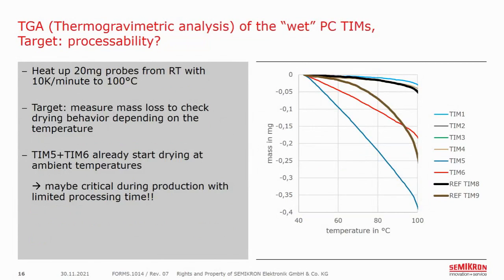In another test, we investigated the wet TIM materials in a thermogravimetric analysis, or TGA, to see if the solvent is already evaporating at lower temperatures or only later. A small probe is put under temperature and the mass loss is measured. Our REF TIM9 is known as the faster drying phase change TIM, but TIM5 and TIM6 dry even faster, which could lead to issues during printing. And in fact, this turned out to be a problem later on. But after consulting the supplier, the proportion of solvent could be increased and the issue fixed.